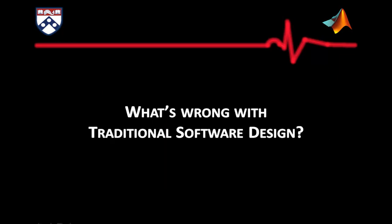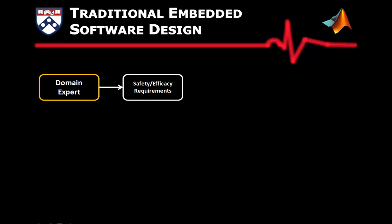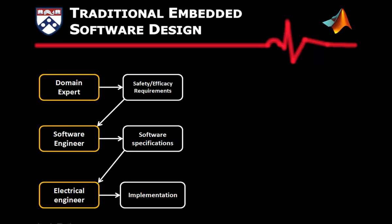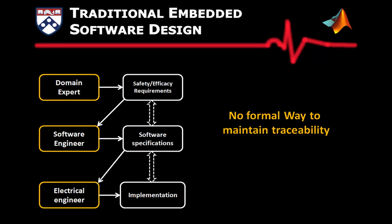So what is the problem with traditional software design? Traditionally, software development starts from the safety and efficacy requirements developed by domain experts. Together with software engineers, they develop the software specifications to satisfy the requirements. Then together with electrical engineers, the specifications are implemented onto hardware. As we can see, there are three distinct documents but there is no formal way to maintain traceability from the requirements to the implementation, meaning we cannot guarantee that the implementation satisfies the requirements.